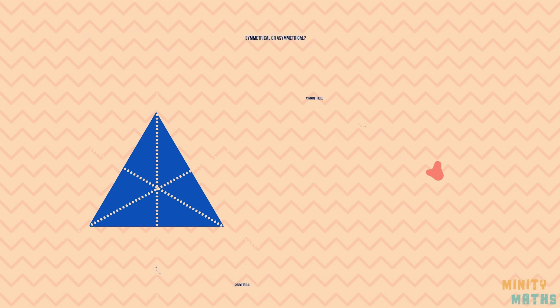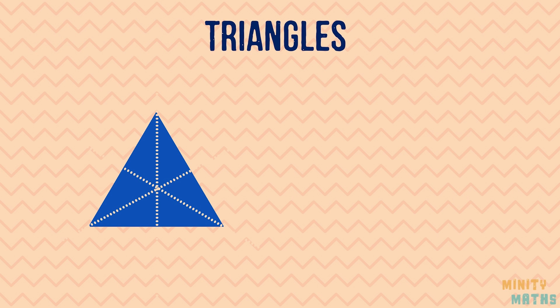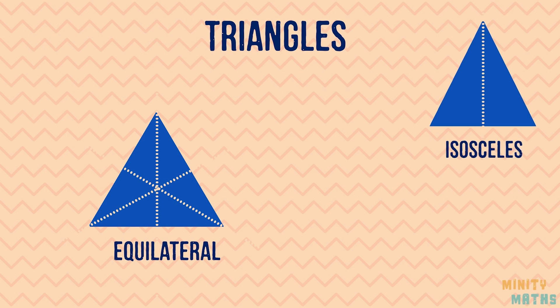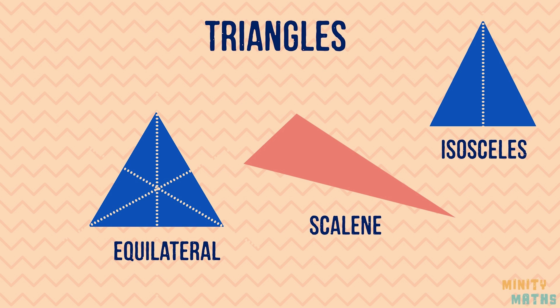Let's look at these triangles. The equilateral triangle and the isosceles triangle have lines of symmetry, so they are each symmetrical. The scalene triangle does not have any lines of symmetry, so it is asymmetrical.